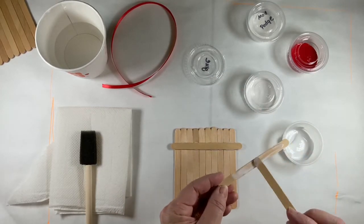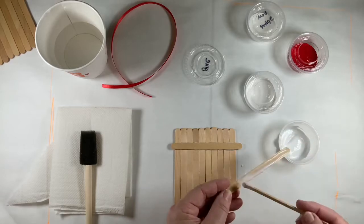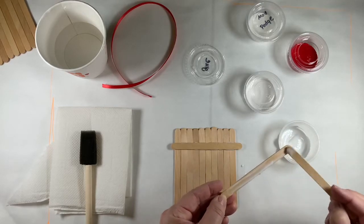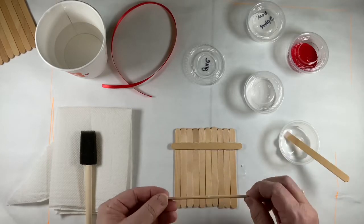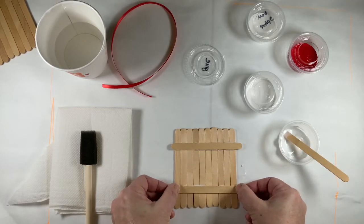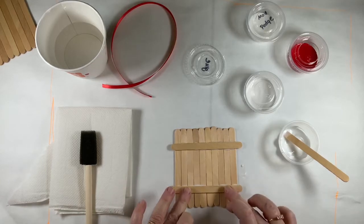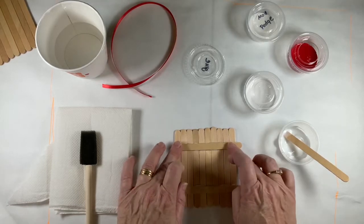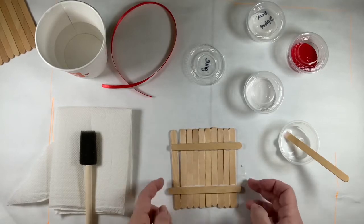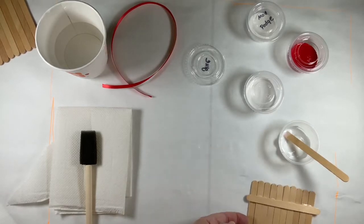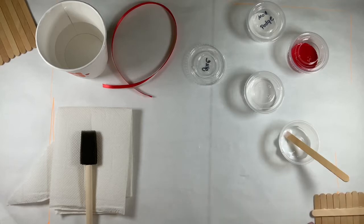And then we'll take the other stick and we spread some glue on that. Lots of glue, be generous so that it doesn't come undone when it's dried. And we put that down there. And now we're gonna let that dry for a bit. I'm gonna put that aside.